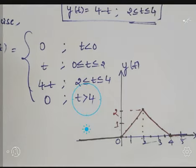This is y(t). In this way, by finding the condition between x(t) and h(t) using the graphical convolution method, we can solve such problems irrespective of the given signals.